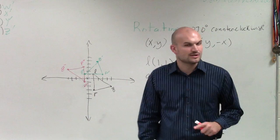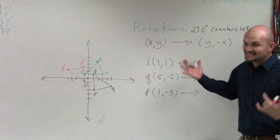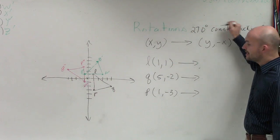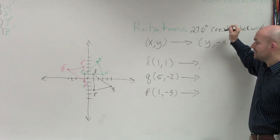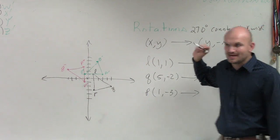So when rotating 270 degrees, to find the exact coordinates, 270 degrees counterclockwise, you swap the y and the x, and you negate the x.